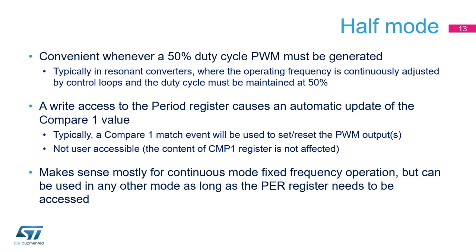Half-mode is a feature that allows reduction of computational burden when a variable-frequency 50% duty cycle PWM waveform must be generated. This is typically the case for resonant converters where the operating frequency is continuously adjusted by the control loop while the duty cycle must be maintained at 50%. The half-mode operating principle is that a write access to the period register triggers a computation and an update of the Compare 1 register to half the value of the period, so the output set event will still happen right in the middle of the PWM waveform.